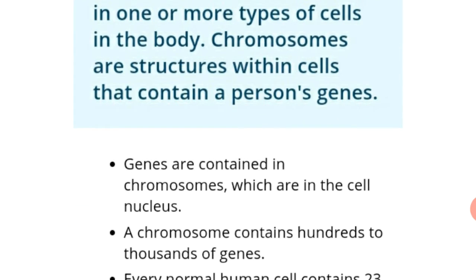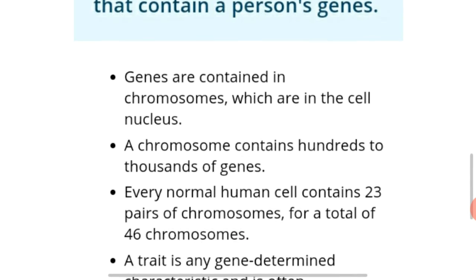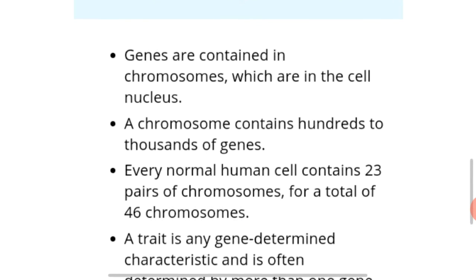Genes are contained in chromosomes, which are in the cell nucleus. A chromosome contains 100 to 1000 genes. Every normal human cell contains 23 pairs of chromosomes, for a total of 46 chromosomes in a human being.